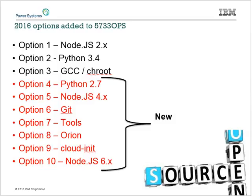A lot has happened in terms of this 5733 OPS offering that we have had available for some time. In 2016, we've actually added six or seven new options to this product. So we went from just having options 1, 2, and 3 to having 10 full options.